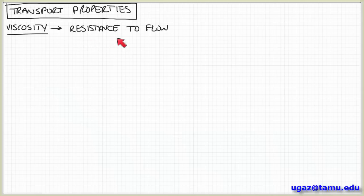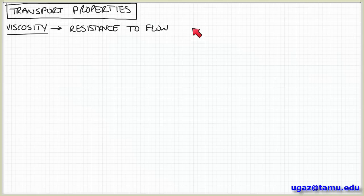We all have a basic idea of what viscosity is in terms of resistance to flow. For example, honey has a high viscosity because it flows very slowly when we try to pour it out of a container. Whereas water pours very quickly, so we could say that has a lower viscosity.